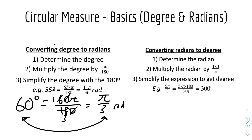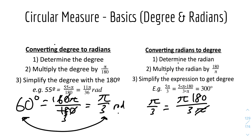To convert from radians to degrees, you flip the multiplier: multiply the radian value by 180/π and simplify. For example, π/3 radians multiplied by 180/π — the π cancels — gives 180/3, which equals 60 degrees.